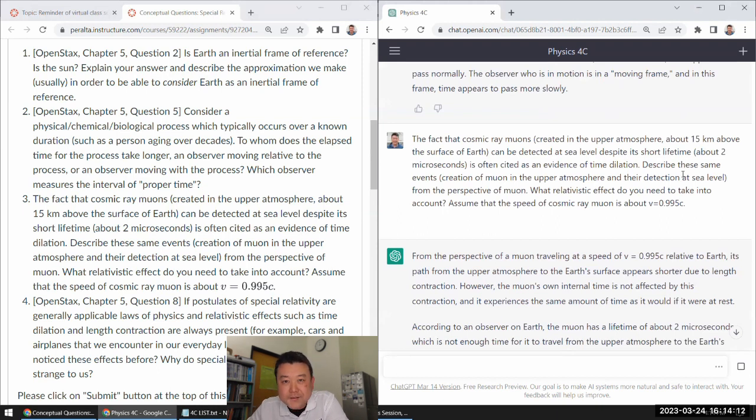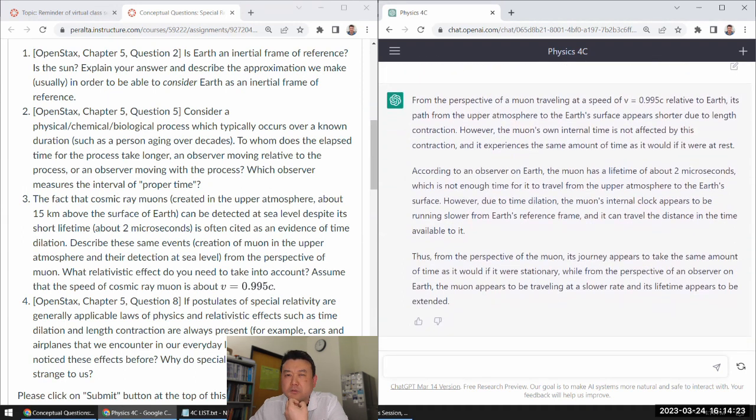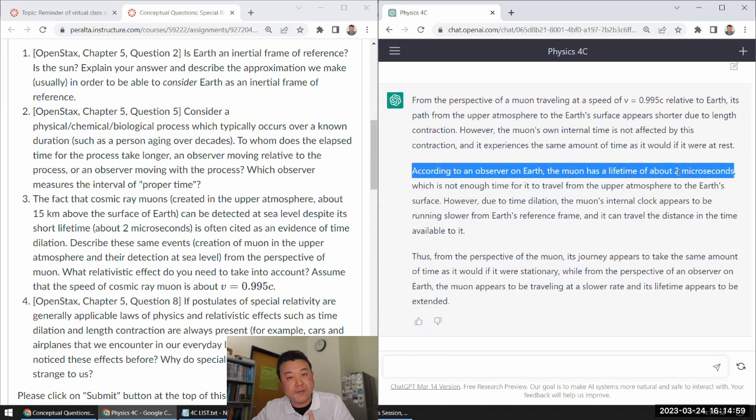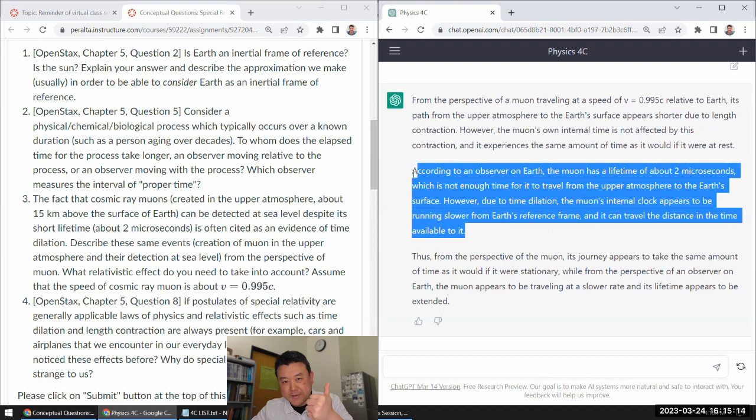So this advanced time dilation describes the same events from the perspective of muon, which would be proper time, or relatively secure. Let's see if it mentions length. From the perspective of a muon traveling at speed, its path from the... yeah, shorter due to length contraction. Yeah, that is the correct answer. However, the muon's own time is not affected. According to observation, the muon has a lifetime. Ah, that is wrong. According to an observer on Earth, the muon has a longer lifetime than this, which is not enough time. However, due to time dilation. Yeah, this is a confused, wrong way of stating it. This paragraph is definitely wrong.